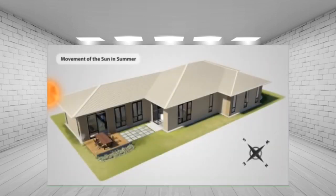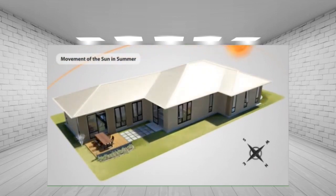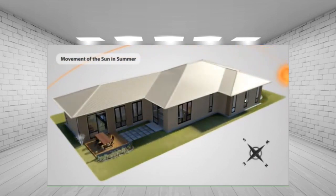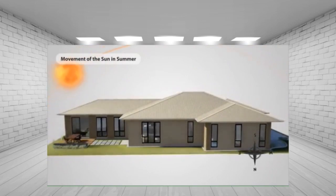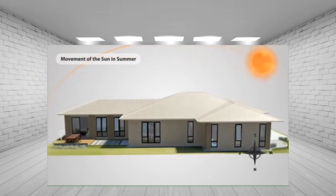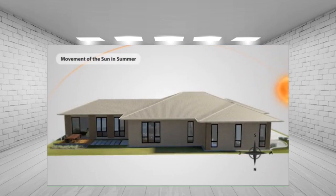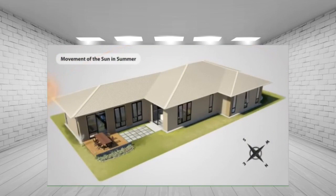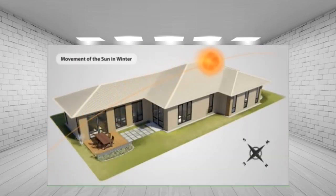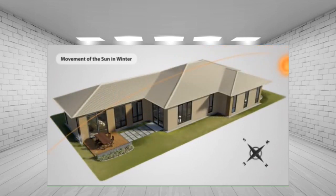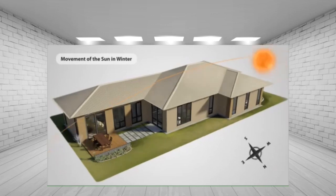It's important to understand the movement of the sun in relation to your block selection and home design. In summer, the sun is higher in the sky; by designing your home correctly you can ensure the home is shaded in summer with eaves and other shading devices, so the sun is not streaming into the north side windows, keeping the home cool. In winter, the sun is lower in the sky, meaning it can penetrate through the windows to the interior of the home, creating heat gain and reducing the need for artificial heating.